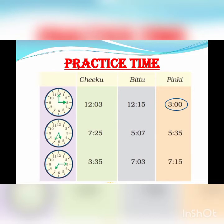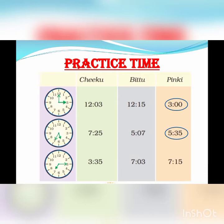Now, second question. Here, the hour hand lies in between 5 and 6, so it is 5 hours. And the minute hand is on 7, so it is 5 multiplied by 7 — 5 sevens are 35, so 35 minutes. So it is 5 hours 35 minutes. And the last one: the hour hand is on 7 and the minute hand is on 3. So it is 15 minutes and 7 hours. Our answer is 7 hours 15 minutes.